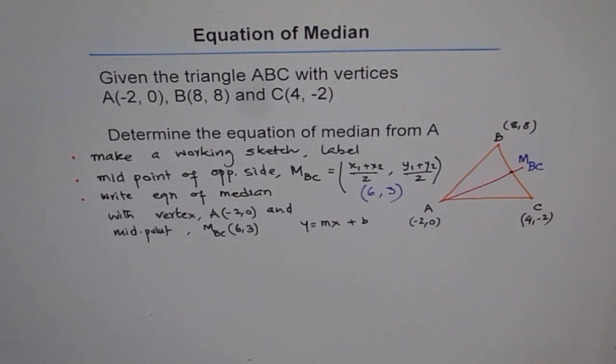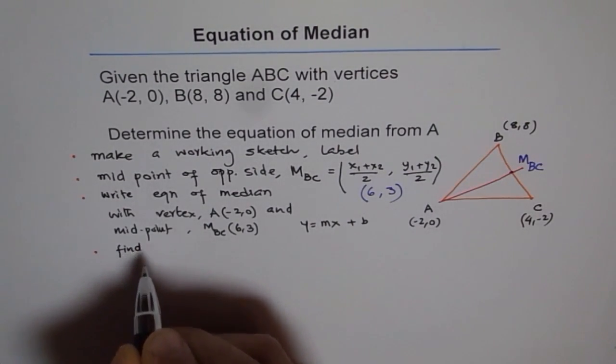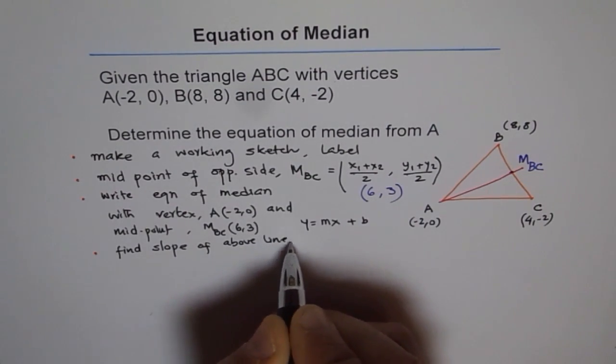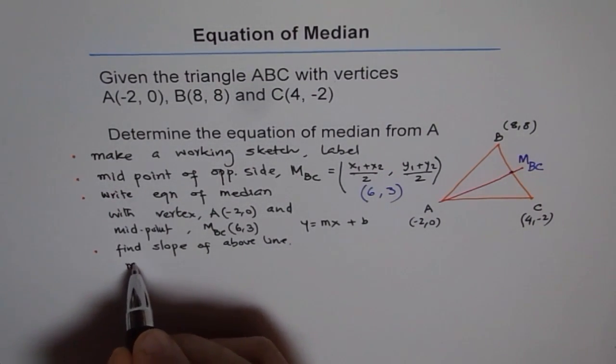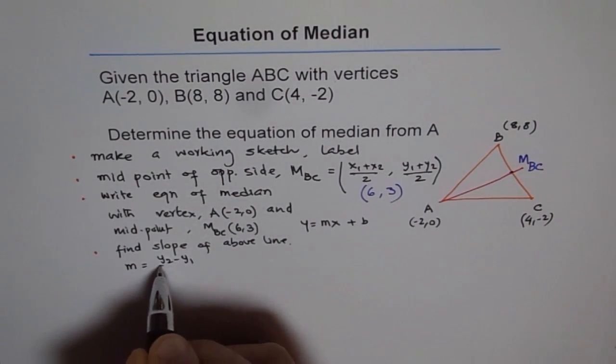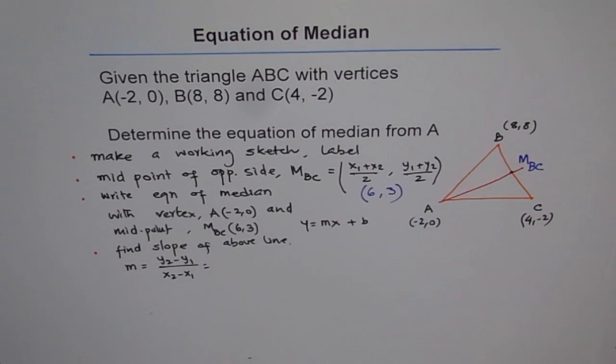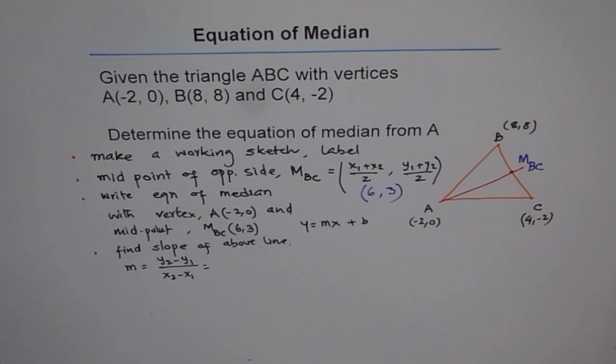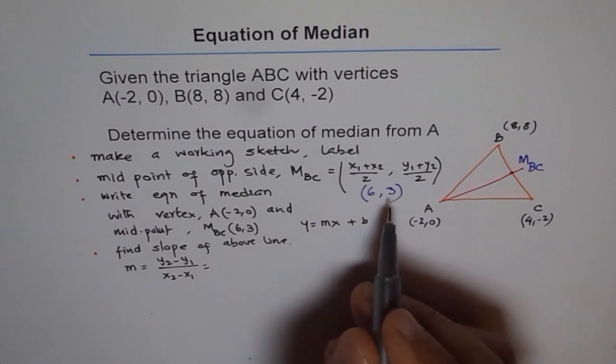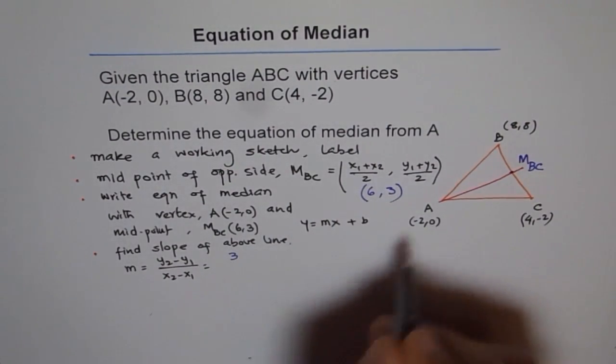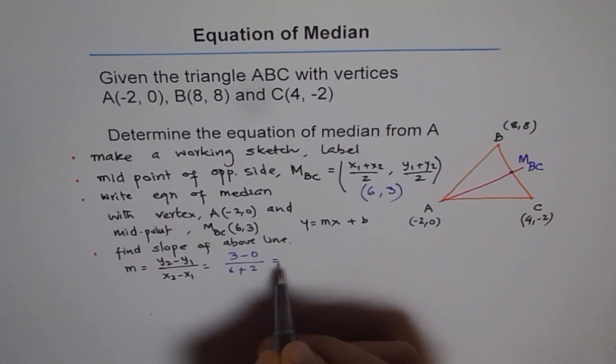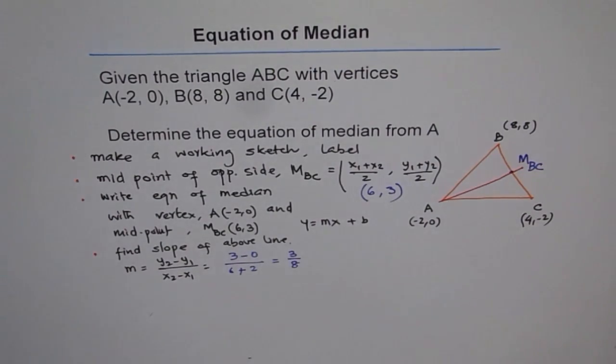So from here, how to find slope? Because we don't know what slope is. So to get the equation, we need to find slope of above line. So what is the slope for the above line? The formula will be M equals Y2 minus Y1 over X2 minus X1. So our points are (6, 3) and (-2, 0). So we'll use 6, Y2 minus Y1, so 3 minus 0, divide by 6 minus (-2), so it becomes plus 2. So we get slope of 3 over 8.